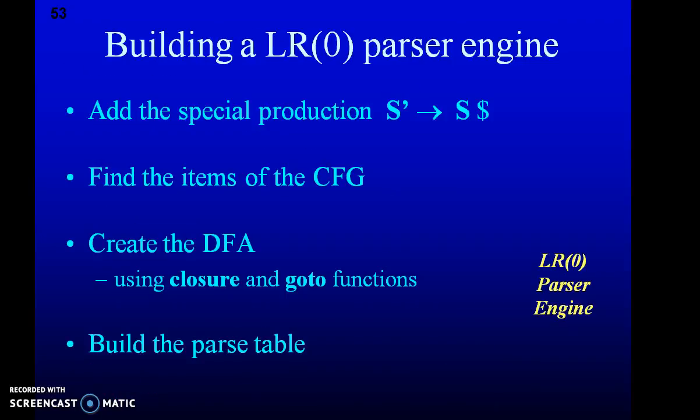To build an LR parser, we first start with LR(0). Take the grammar and construct the augmented grammar — starting with symbol S, you introduce S-dash. Then find the corresponding items of the CFG (context-free grammar) and create the DFA (deterministic finite automaton), which uses two functions called closure and goto. Using these, you construct the parsing table, filling the action and goto contents using LR(0).